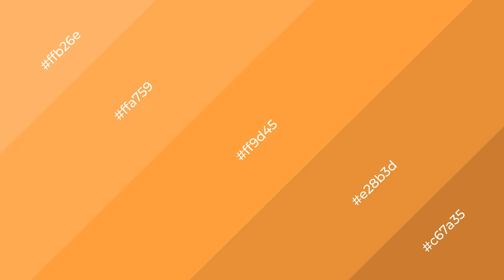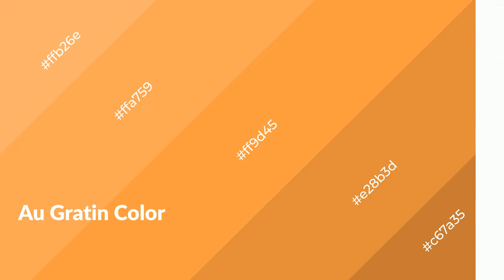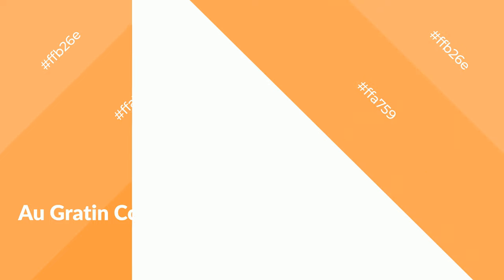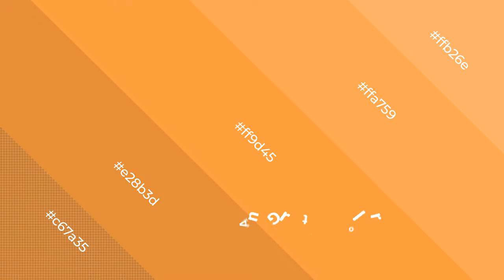Augraten is a warm color and it emits cozier and active emotion. Warm colors are symbols of warmth, fire, heat, and sunshine. It also evokes joy, passion, love, and even anger emotions. You can see them used in restaurants and gyms.